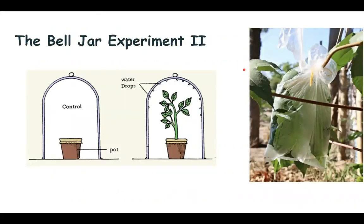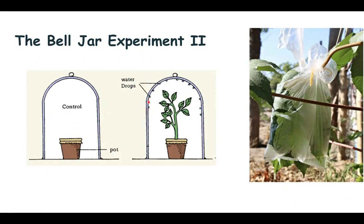The Beljar experiment can also be done using only two Beljars, where one is the control setup and the second is the actual experimental setup. The experimental setup will have a potted plant where the soil and the pot is covered, and the plant will be transpiring, resulting in accumulation of water droplets on the inner surface. In the control setup, there is no plant, so there is no formation of water droplets, clearly indicating that the pot and soil did not produce any water vapor. Whatever water droplets accumulated came from the plant, indicating that green plant parts transpire.